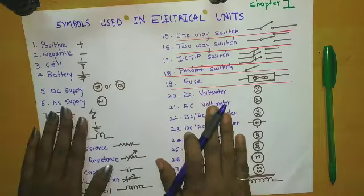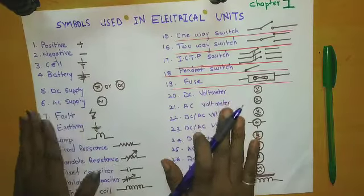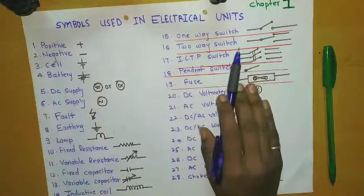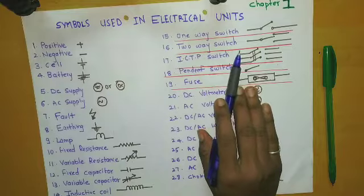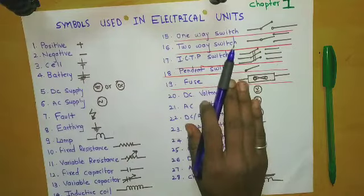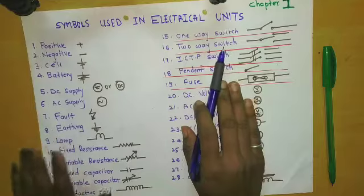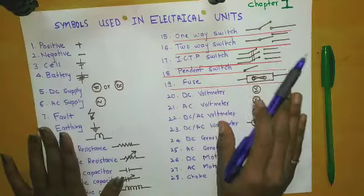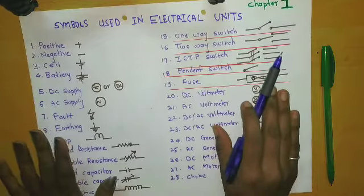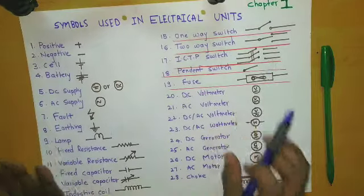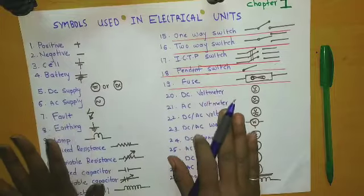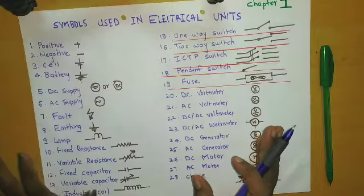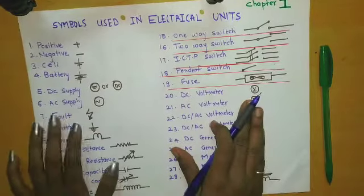Today we are going to start electrical maintenance and the first chapter is symbols used in electrical units. We need to understand symbols because if we know the symbols then we can read or draw the electrical circuit. If we are not able to understand the symbols then we are not able to read the circuit diagram which will be provided. So it's very important that we must know the symbols.